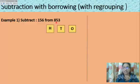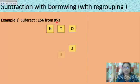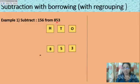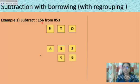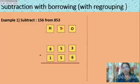So 156 from 853: the bigger number is 853, so 3 is in the ones place, 5 in the tens, and 8 in the hundreds. Minus — the smaller number is 156, so 6 in the ones place, 5 in the tens, and 1 in the hundreds place. Now let us start our subtraction from the ones place.